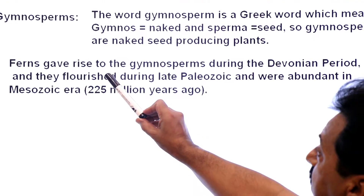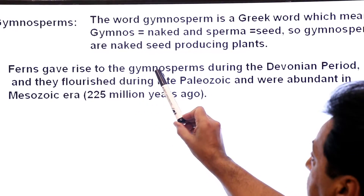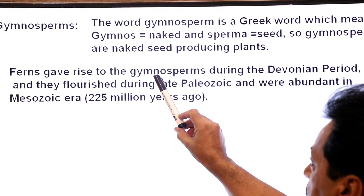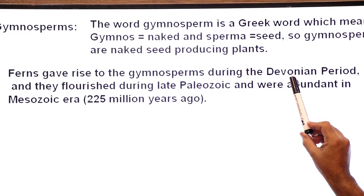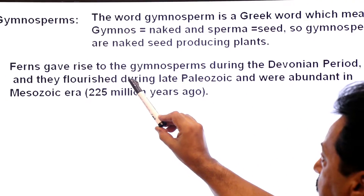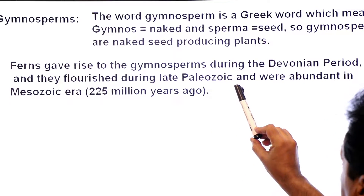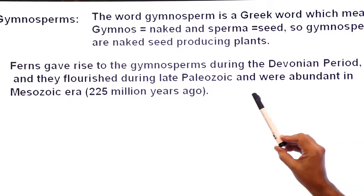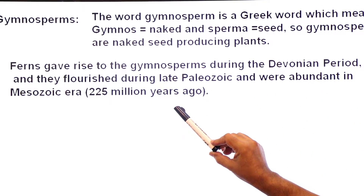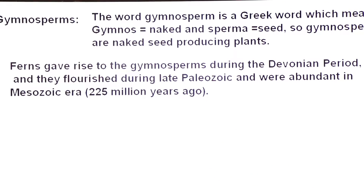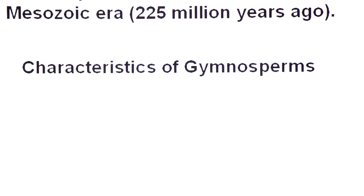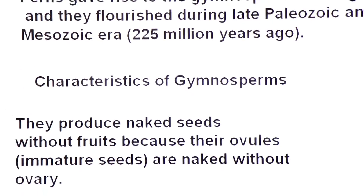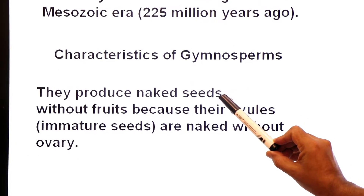Ferns gave rise to gymnosperms, so their ancestors were ferns. During which period? They appeared in the Devonian period. They flourished during the late Paleozoic era and were abundant in the Mesozoic era, about 225 million years ago.